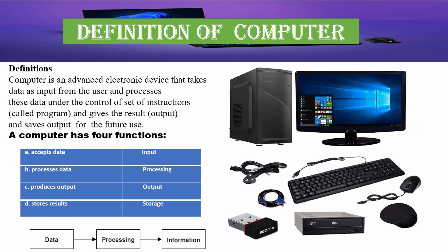And it saves the output for future use. A computer does only four things: it accepts data as an input, it processes data which we call processing, it produces the output which we call the output, and it stores the results which we call storage.